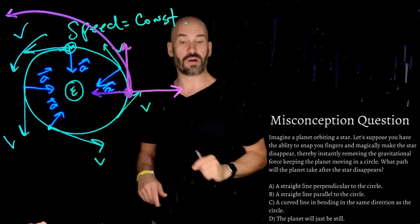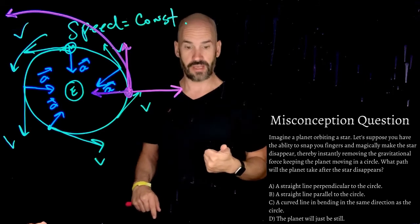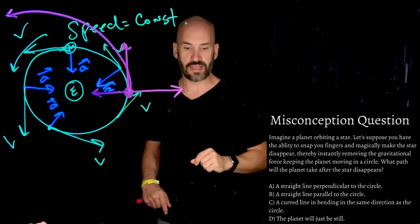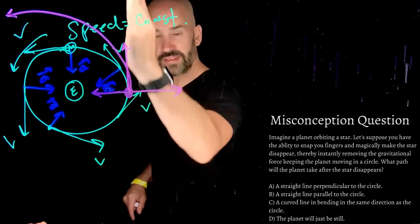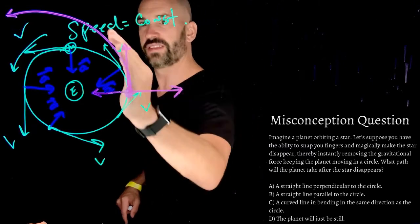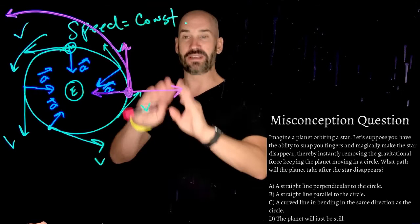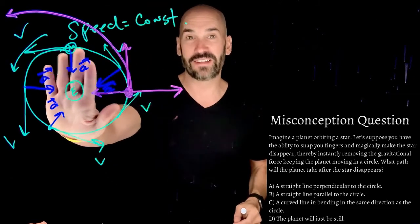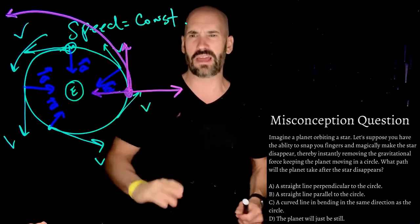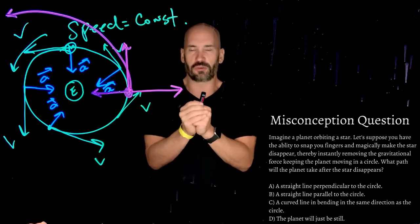So in our problem here, the options are A, a straight line perpendicular to the circle, that's this guy, straight line perpendicular out. A straight line parallel to the circle. That's this guy here. C, a curved line bending in the same direction as the circle. So that would be this. And T, the planet will just be still. If I take away the sun, or in this case, the earth, whatever's gravitationally keeping that in a circle, if I take it away, we'll just stop moving completely because the gravitational source is gone.